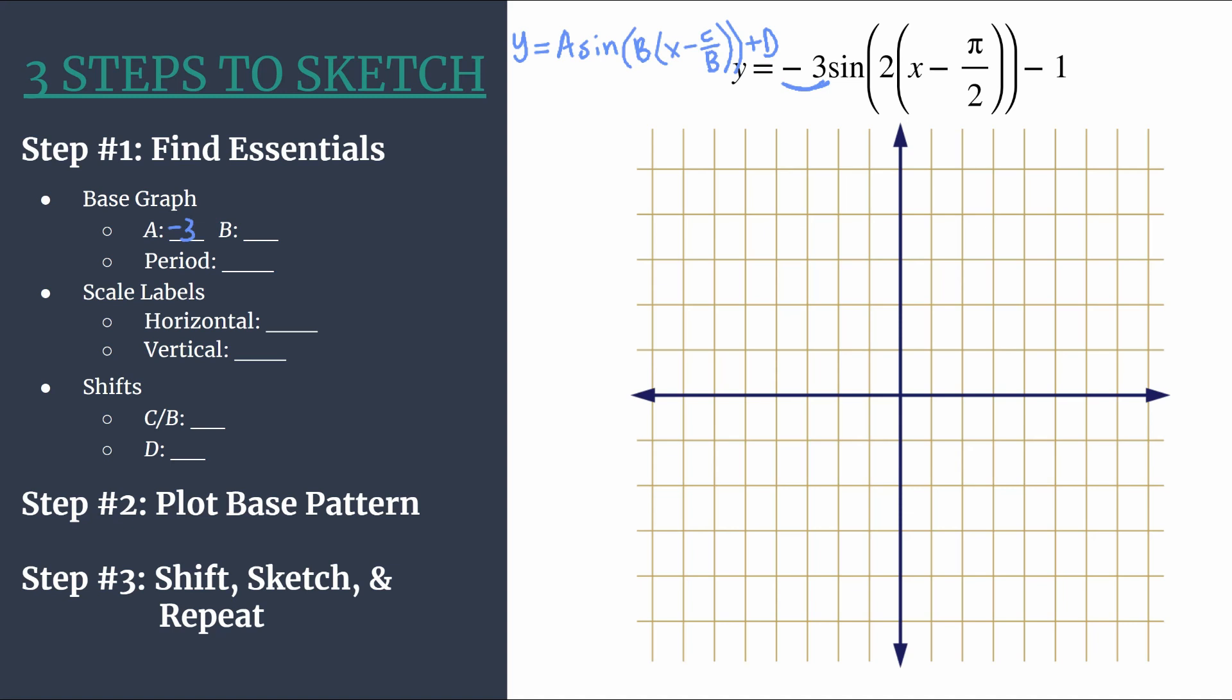One other huge thing is that negative out front. I like to put myself a star or circle or highlight or something that's going to flag my attention back to that when I start graphing the base pattern, because we know the negative signifies that we've had a vertical reflection, which means that our base graph has reflected over the x-axis. So we'll talk more about that later, but it's nice to make a note of that right now.